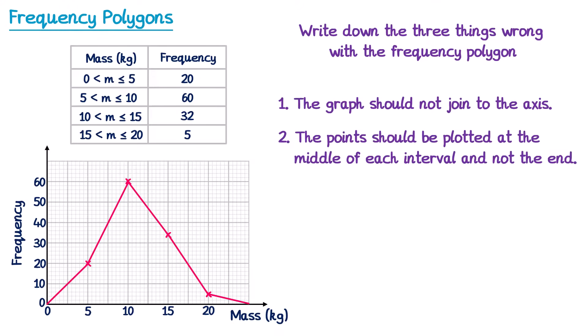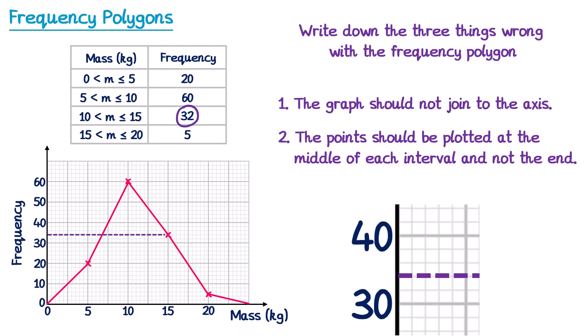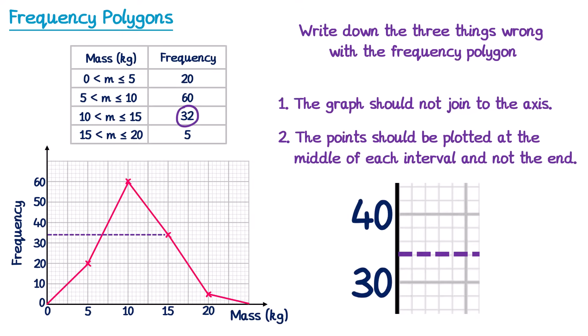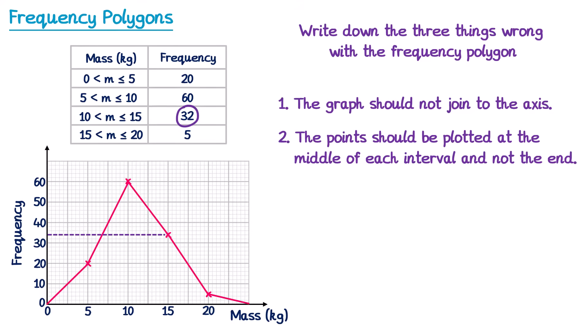To find the final mistake we need to look carefully at the frequencies and find where they've been plotted. This frequency here at 32 has been plotted incorrectly. You can see if you draw a line across here that this is 2 squares above 30. Just like in the previous example each one of these squares is going to be worth 2 since there are 5 squares between 30 and 40. So it goes 32, 34. So this one's been plotted at 34 instead of 32. So for the final error we could say that the third point has been plotted at 34 rather than 32.